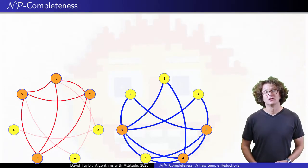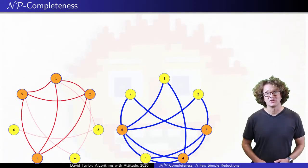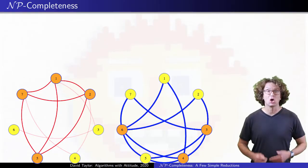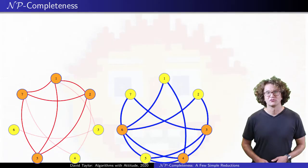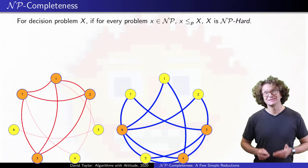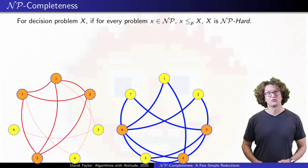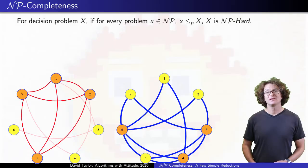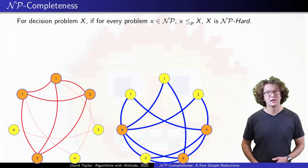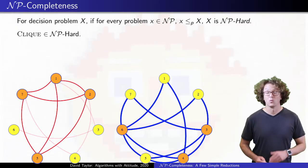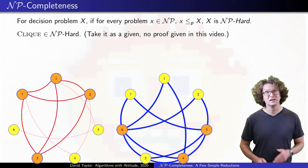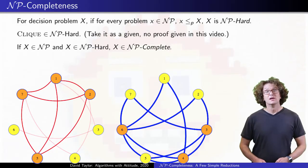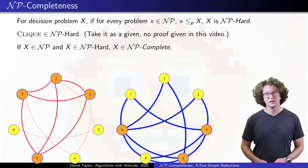We are finally ready to define some new complexity classes. Because independent set reduces to clique, in some sense we say that clique is at least as hard as independent set. Now suppose that you have some problem X that is at least as hard as any NP problem — that is, for any problem in NP, we can reduce it to problem X, so X is as hard as any of them. We say that X is NP-hard. Unlike NP, the NP-hard complexity class is a statement of difficulty, not ease. Clique is NP-hard — I won't prove that here. So now we have a statement of ease for clique and also a statement of difficulty. If a problem is in both of these complexity classes, we say it is NP-complete, so clique is NP-complete.